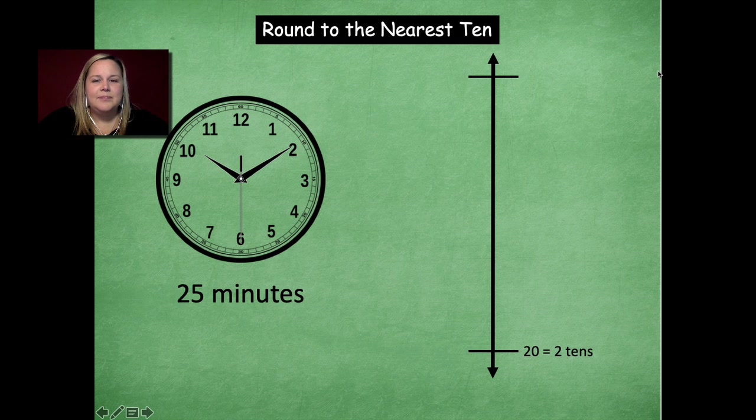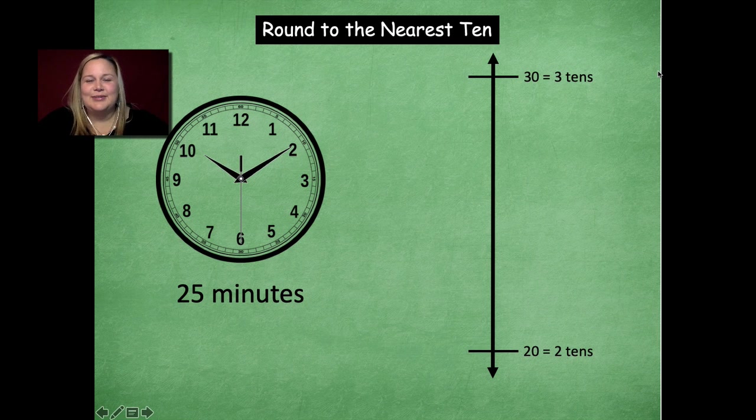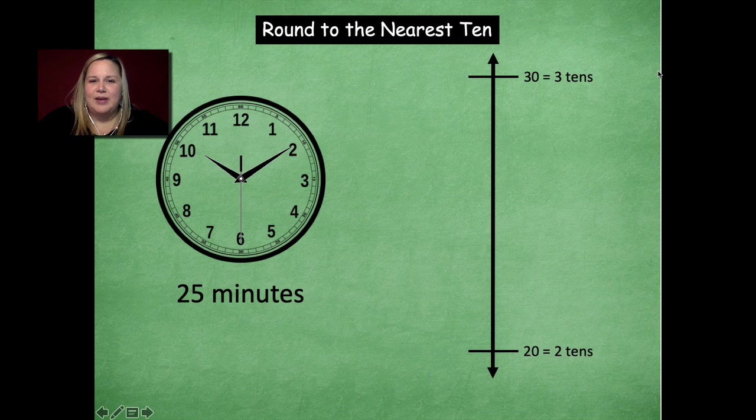Yeah, two tens. You got it. And then what's one more 10 than two tens? Three tens, which is 30. Oh, goodness. See, even teachers make mistakes. But anyway, we're going to move on and persevere through that mistake. And we're going to label our points in between. We have our midpoint there, which is 25.